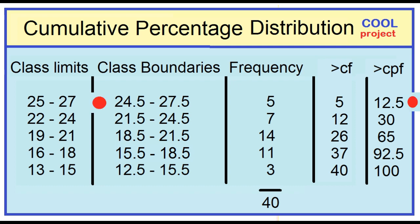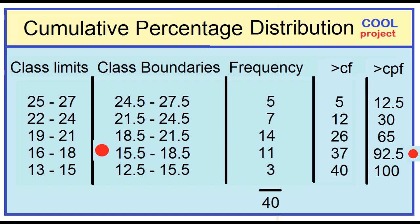The table shows that 12.5 percent of the women each had a boyfriend when they were more than 24.5 years of age. 30 percent when they were more than 21.5 years of age. 65 percent when they were more than 18.5 years of age. 92.5 percent when they were more than 15.5 years of age. 100 percent when they were more than 12.5 years of age.